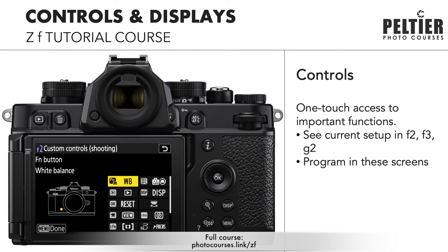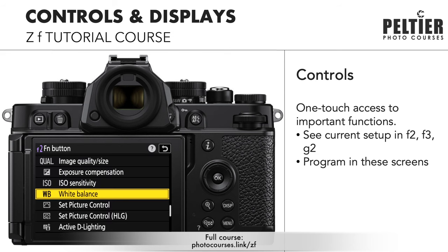Anytime you want a reminder of what your controls do, this is where you can come. If you want to change how something is set up, you'll also come into these menus. You can just tap on or highlight and press OK to see what the functions are. Different functions are available for each control, and this varies between shooting, playback, and movie modes.